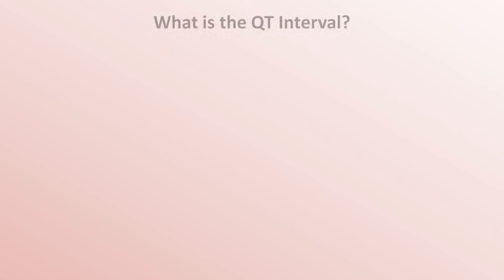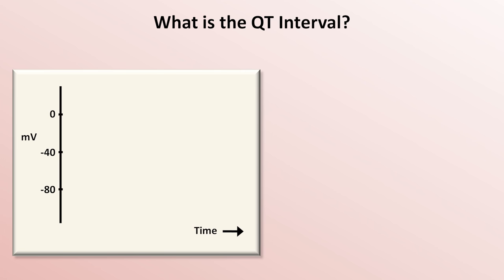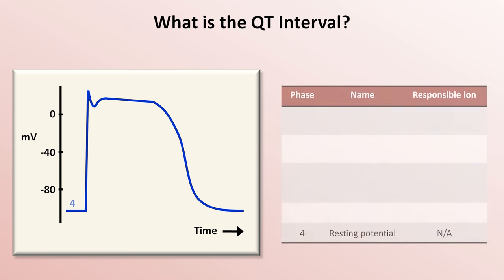First, what is the QT interval physiologically? The QT interval represents the time delay between depolarization and repolarization for all of the ventricular myocardium. Here is an action potential for a typical single myocardial cell. I'm just going to spend a minute on this, but it's important to understanding a couple of things later on. The action potential is divided into five phases. It actually starts at phase 4,